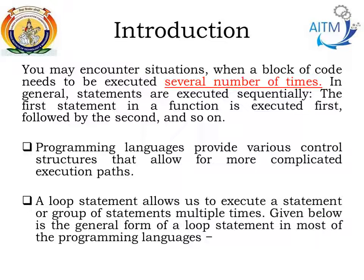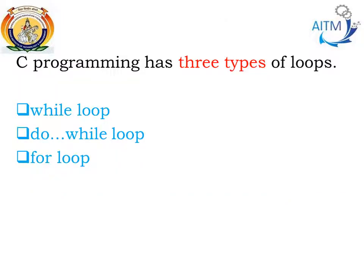Below is the general form of a loop statement used in most programming languages. C programming has three types of loops: the while loop, the do-while loop, and the for loop. Let us discuss each of these loops in detail.